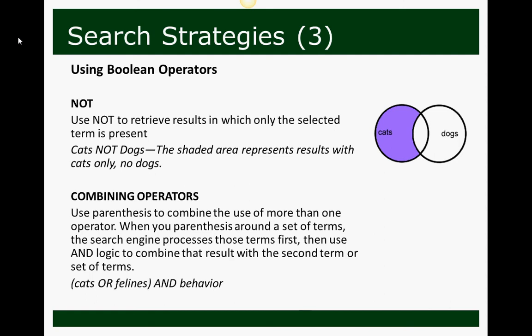You can combine operators by using parentheses. When you use parentheses around a set of terms, the search engine processes those terms first, then you can use your next logic to combine that result with a second term or set of terms. In this example, 'cats OR felines' is in parentheses, so the database first pulls all results with cats or felines, then employs AND to pull results that have cats or felines and behavior. Boolean operators can be difficult at first, but like many things in information literacy, it becomes easier with practice.